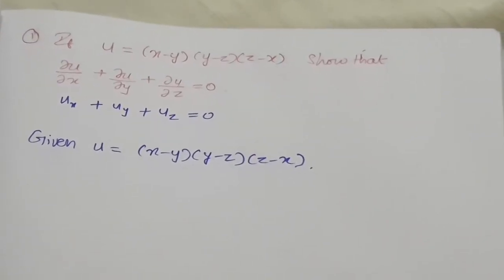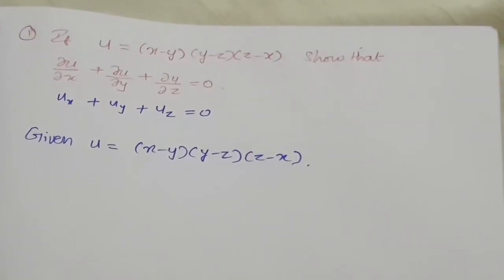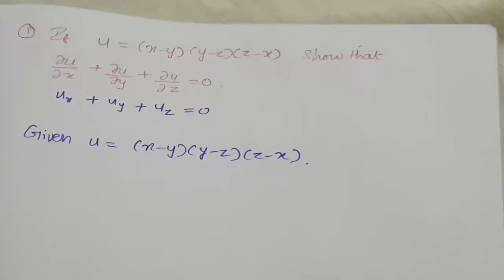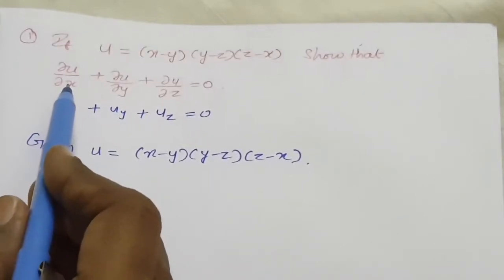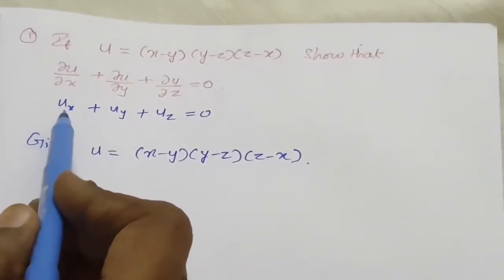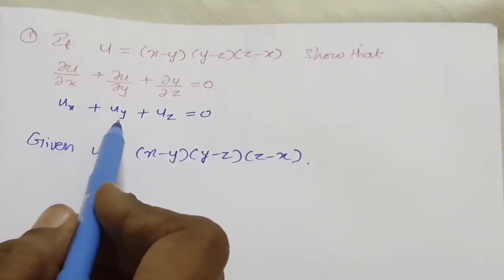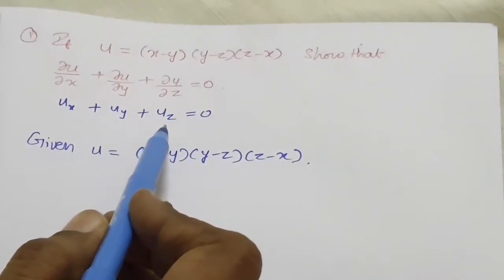We have already discussed the basic definitions and rules of partial derivatives in class. Now let us see the first problem. Here they given the value of u as (x minus y) into (y minus z) into (z minus x), and they asked to show that ∂u/∂x plus ∂u/∂y plus ∂u/∂z equals 0. The ∂u/∂x can also be written as u_x, ∂u/∂y as u_y, and ∂u/∂z as u_z.